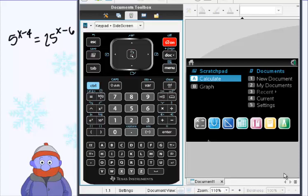Okay so what we're going to do with this video is find a solution on the graphing calculator of the exponential equation 5 to the x minus 4 equals 25 to the x minus 6.